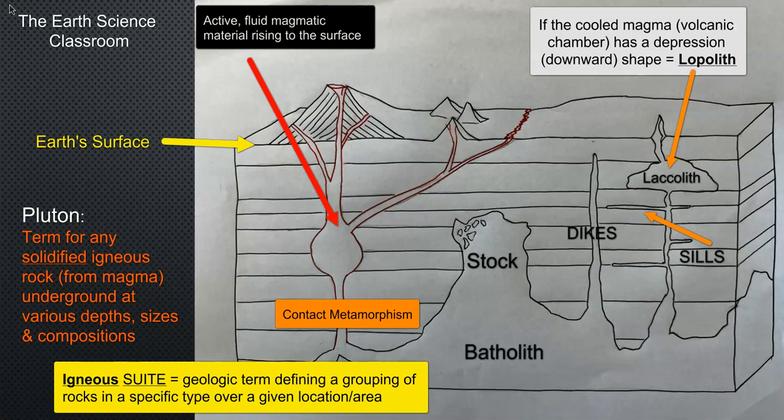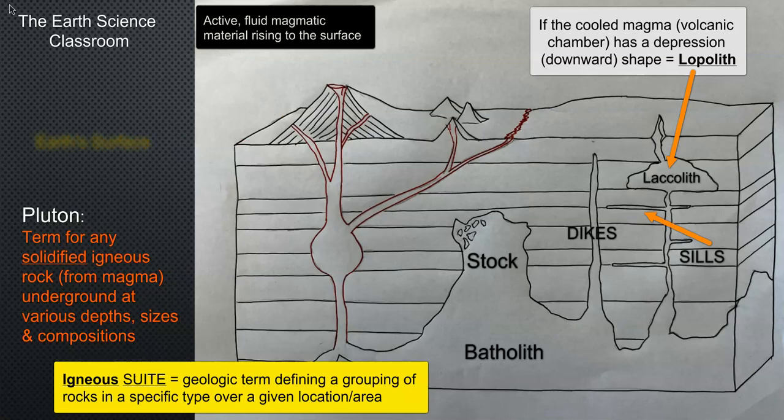All of these intrusive plutons can be called a suite, which is basically a term given for an area of various similar or same composition rocks in terms of igneous, metamorphic, or sedimentary.